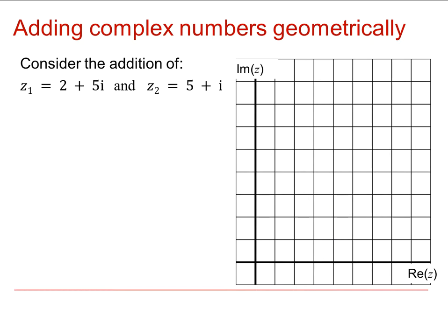Well, now we can think about what happens if we've got two complex numbers and we're going to add them together. So if we've got z1 is 2 plus 5i, we can represent that by the vector from the origin to the point 2, 5. And 5 plus i, likewise to the point 5, 1.